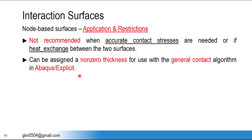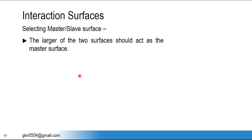Element-based and node-based surfaces are the two most important interaction surface types at the initial level. When defining interaction between two objects (not self-contact), you need to define master and slave surfaces. The key question is: which surface should be the master and which should be the slave?